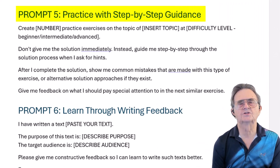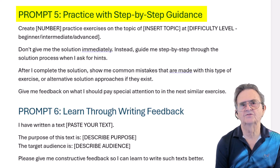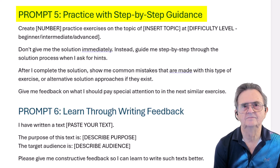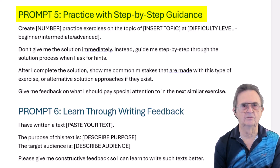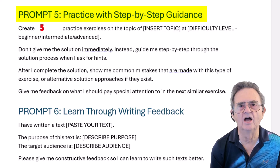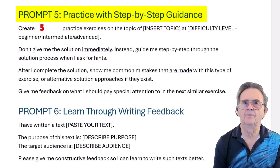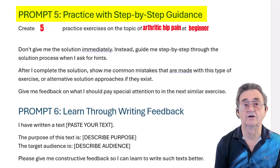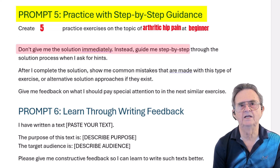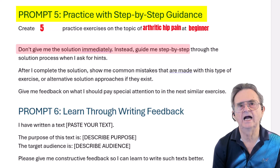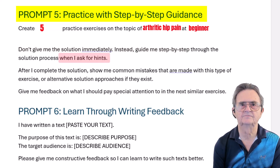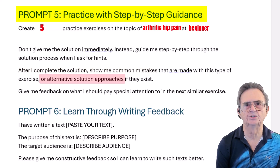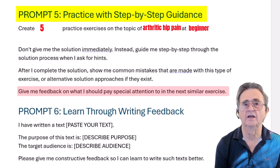Prompt number five: Practice with Step-by-Step Guidance. Prompt five is for when you want to actually do something with what you're learning — you're not just reading about it. Create five practice exercises on, for example, arthritic hip pain, at difficulty level beginner. Don't give me the solution immediately. Instead, guide me step-by-step when I ask for hints. After I complete it, show me common mistakes and alternative approaches. Give me feedback on what to focus on next.